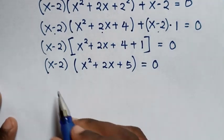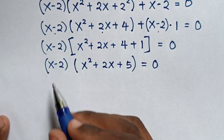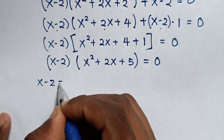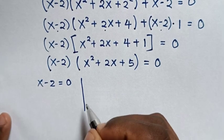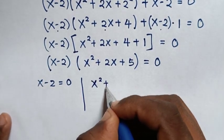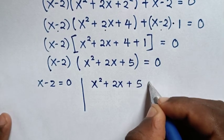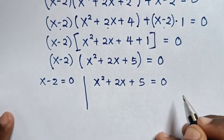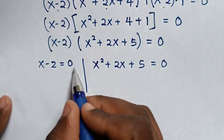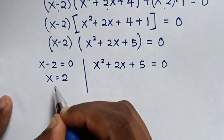Now from this equation we have two solutions: the first solution is x minus 2 is equal to 0, and the second solution is x squared plus 2x plus 5 is equal to 0. From the first solution, we take negative 2 to the right side, so it will be x is equal to 2.